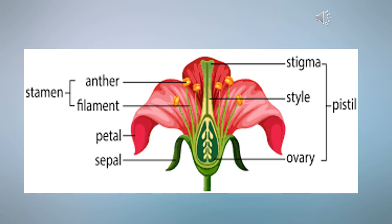The male parts of the flower are the anthers and the filaments — together they are known as the stamen. The petals are the brightest part of the flower; they are usually large and colorful. The job of the petals is to attract insects to the flower. Inside the flower lie both the male and female parts.